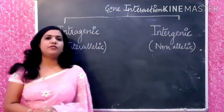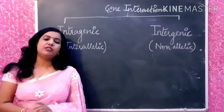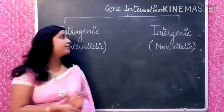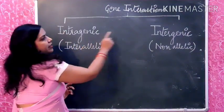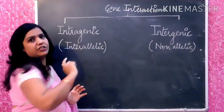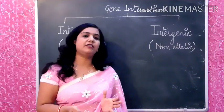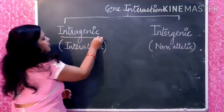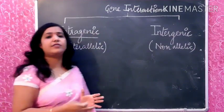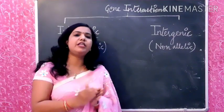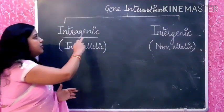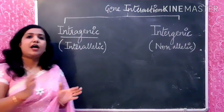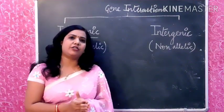Now we will study the types of gene interaction. Gene interaction may be of two types: intragenic and intergenic. Intragenic, as the name indicates, means interaction within a gene — that is, interaction occurring within one gene.